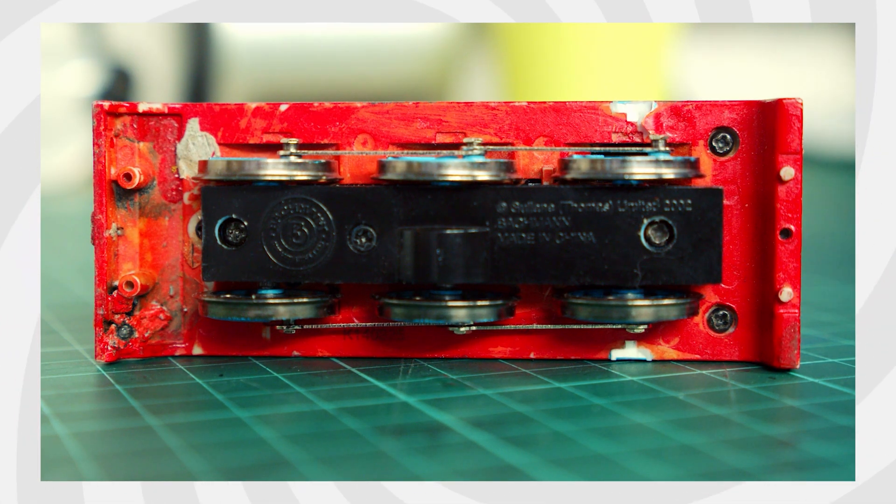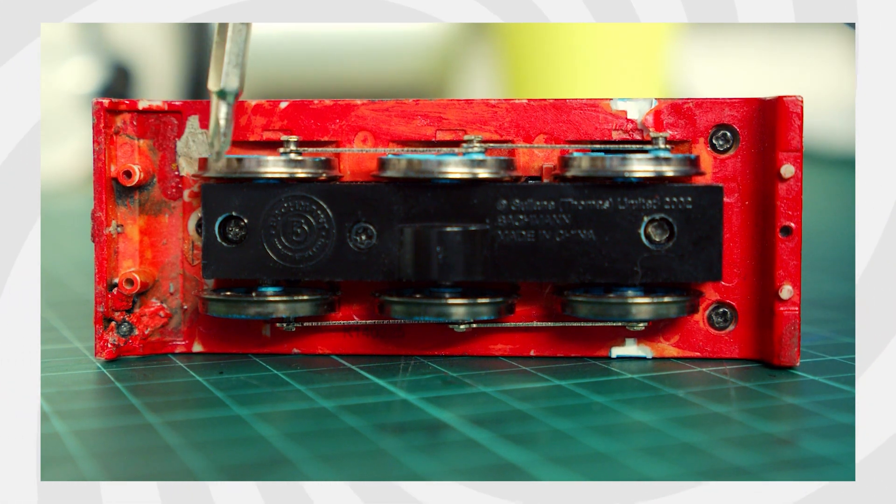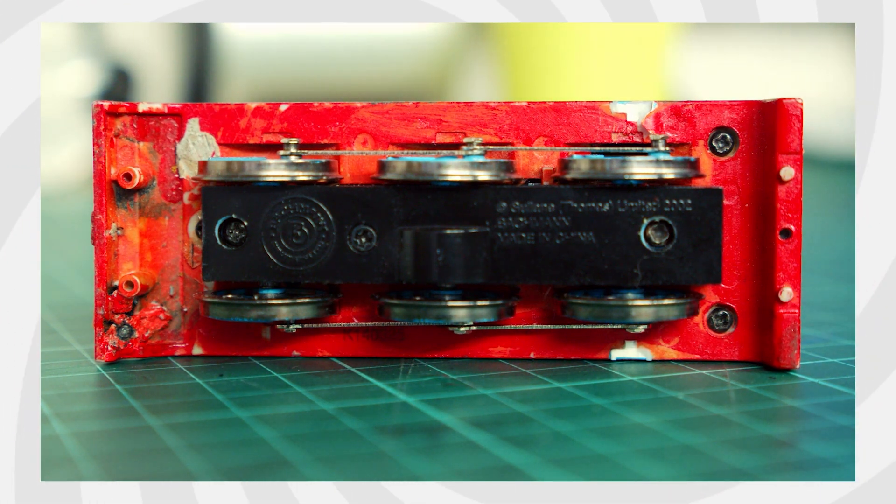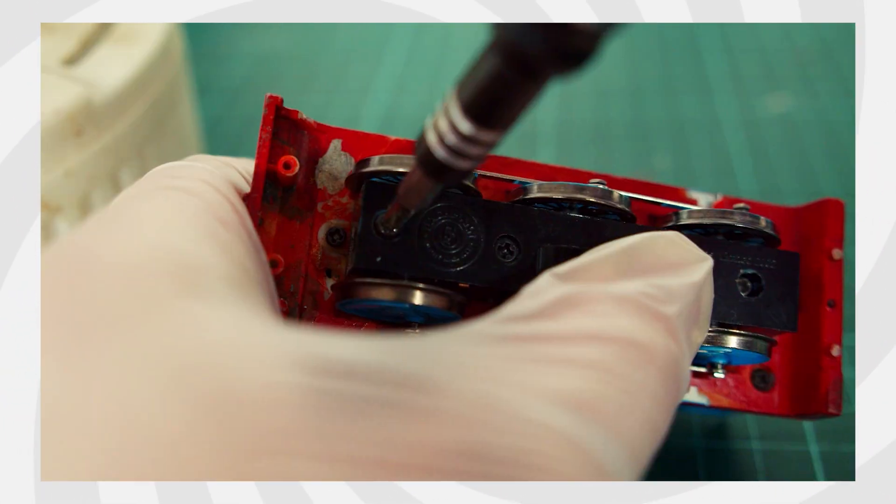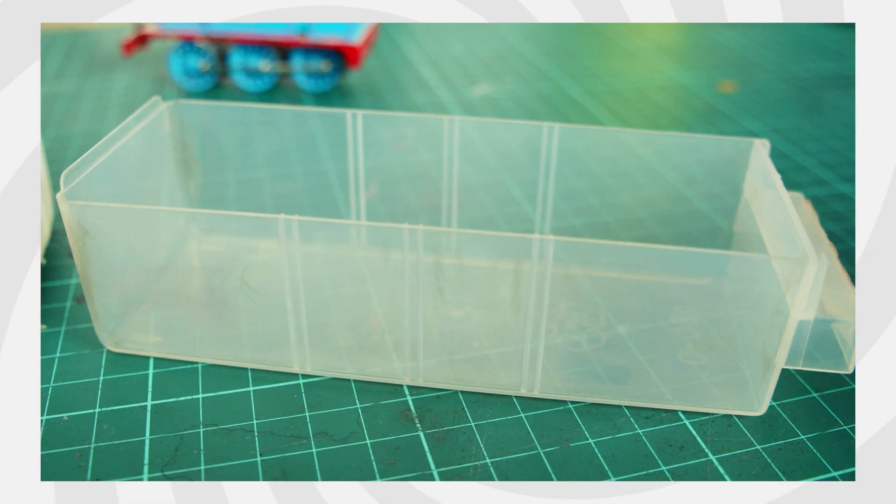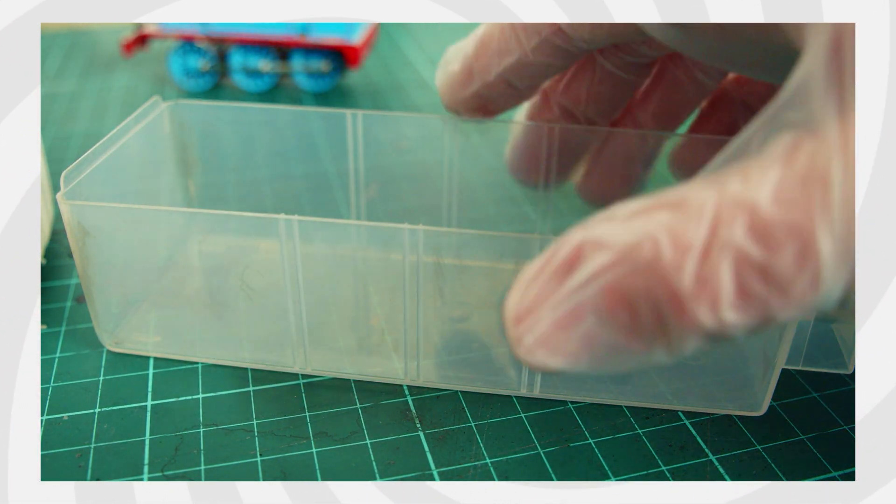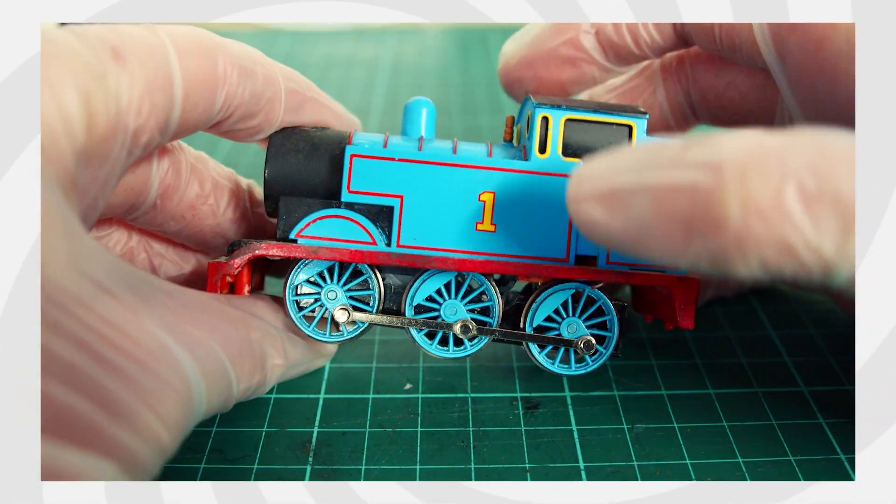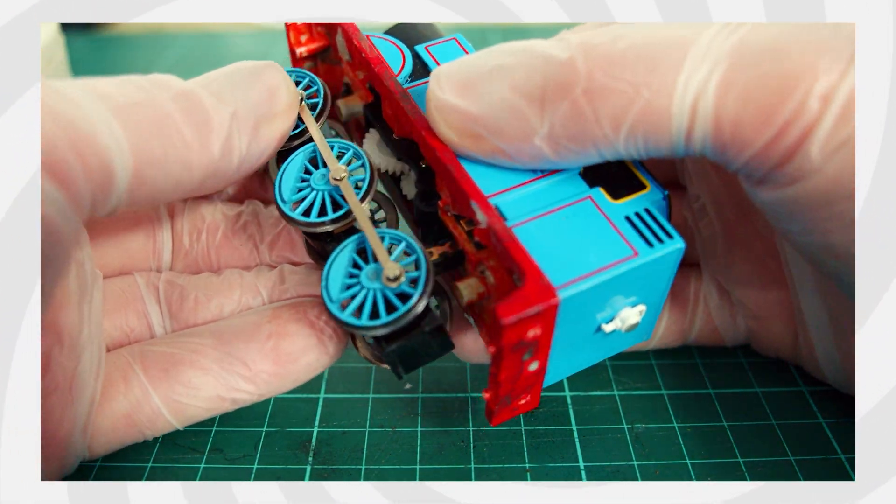To begin with, you'll need to remove these two screws at the bottom of the chassis. The middle one keeps the wheels in place, so no need to remove that. Make sure you put all of the screws somewhere safe, so they won't get lost.